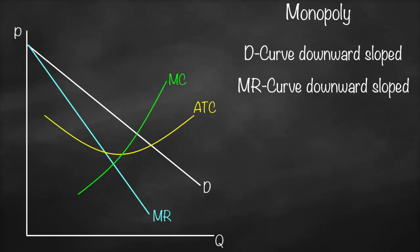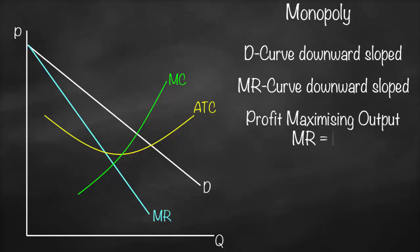What will be our profit-maximizing condition? The profit-maximizing condition is the same for all four types of market structure, which is marginal revenue equals marginal cost. The marginal revenue (blue curve) will intersect with the marginal cost (green curve) at a point, and from there we get our Q*, which is our profit-maximizing quantity.